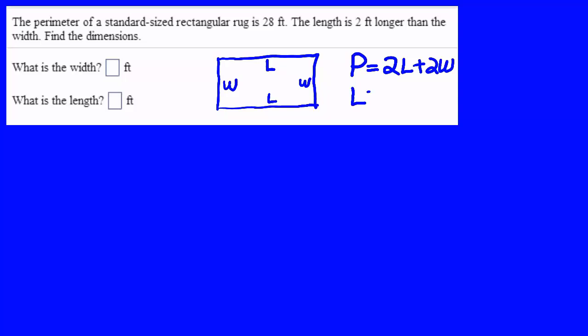Now we're told that the length is of course longer than the width, and in fact the length is 2 feet longer than the width. With this knowledge, we can solve this problem with substitution. P equals 2L plus 2W, but remember that L is W plus 2, and the perimeter is 28 feet.